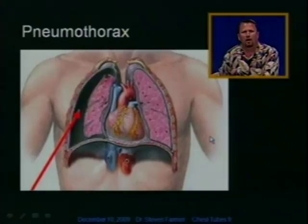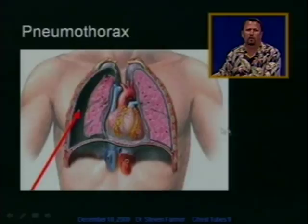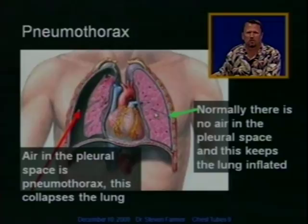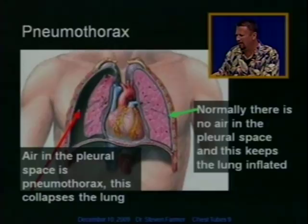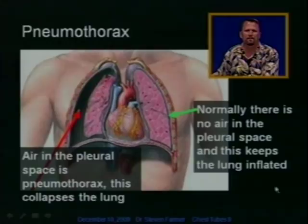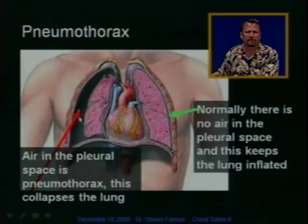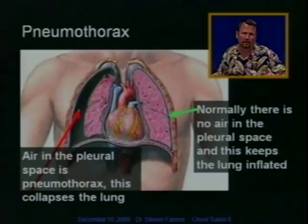Let's talk about pneumothorax. Here is a picture of a pneumothorax. Looking at the normal lung first — normally, there is no air in the pleural space. There's really nothing in the pleural space other than a tiny amount of lubricating fluid, and this pleural space helps keep the lung inflated. But if air gets into the pleural space, this can collapse the lung. We can see the lung has collapsed because some air has gotten into the pleural space. This is called pneumothorax.